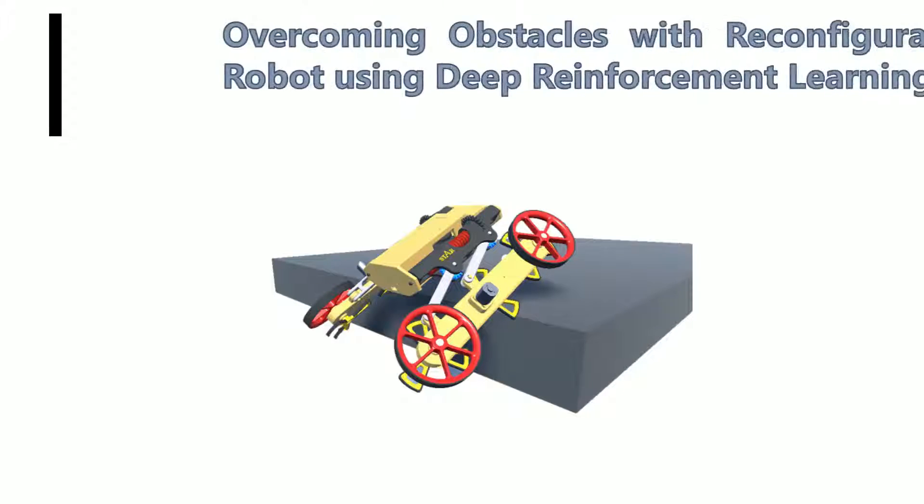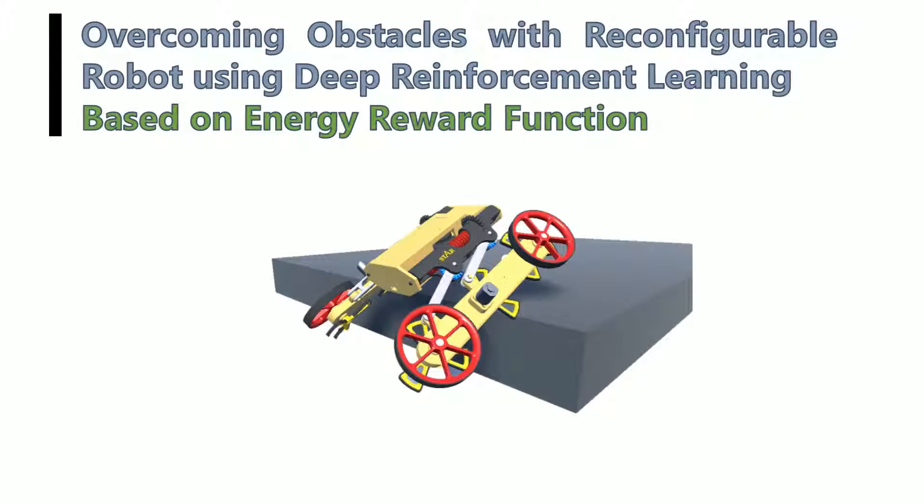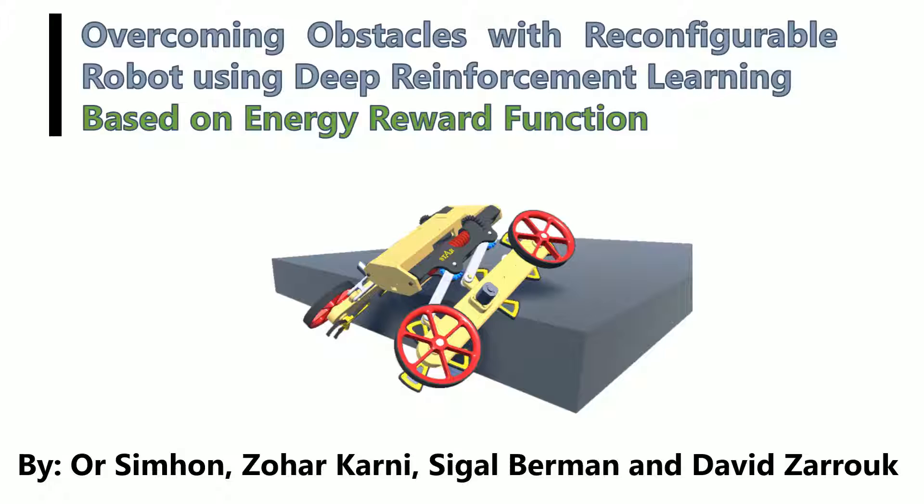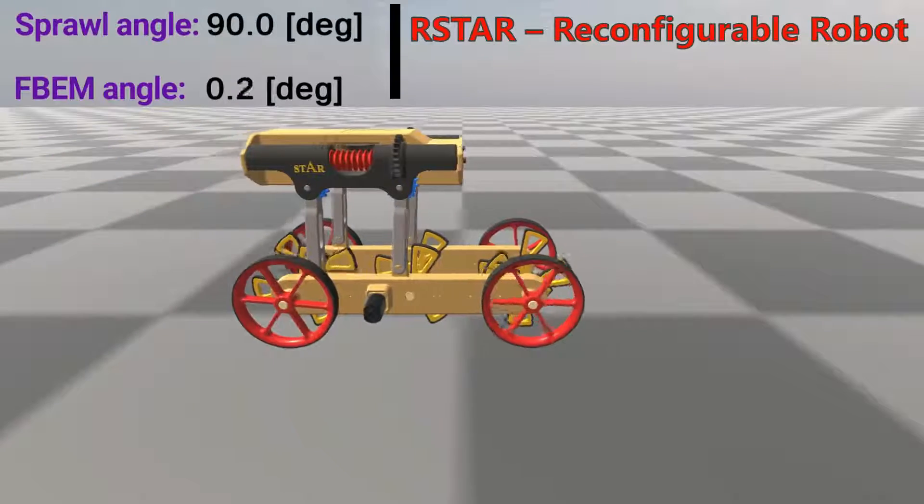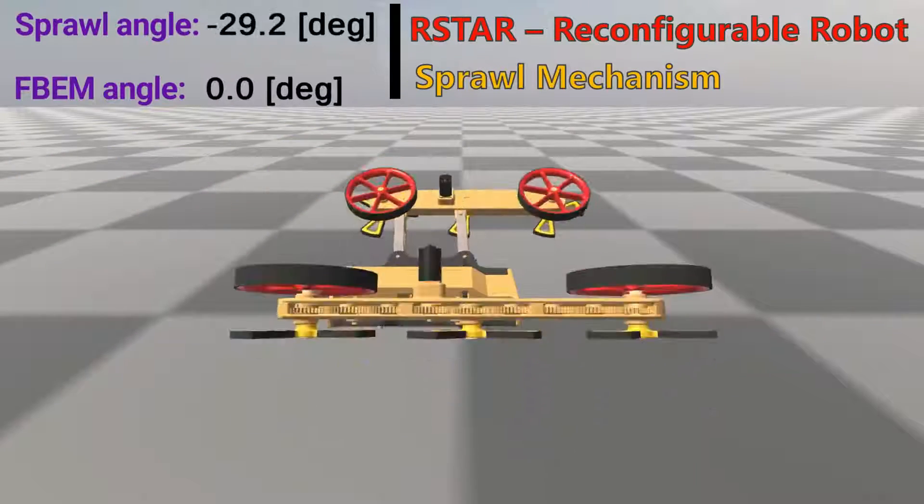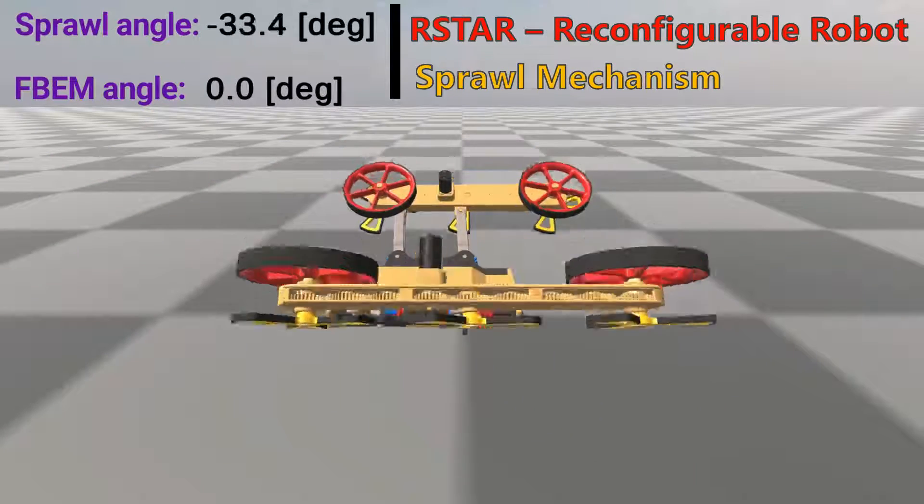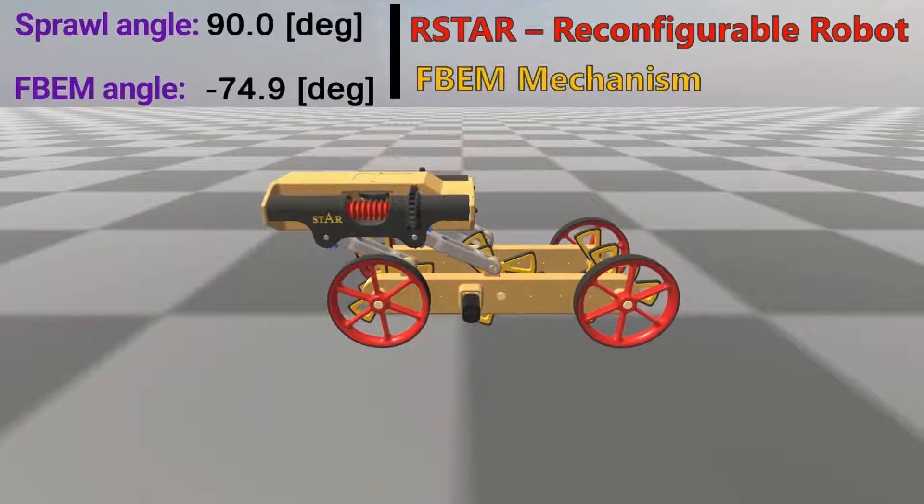Overcoming obstacles with reconfigurable robot using deep reinforcement learning based on energy reward function. The R-Star is a crawling robot capable of reconfiguring its shape and moving the location of its center of mass using a sprawl and a four bar extension mechanism.